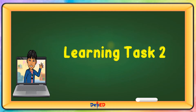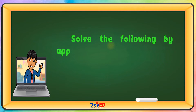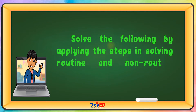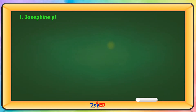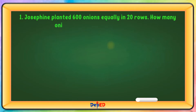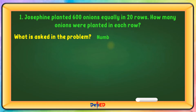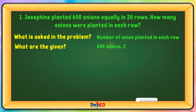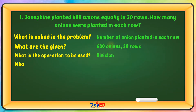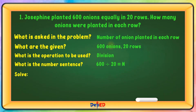Learning Task 2. Solve the following by applying the steps in solving routine and non-routine problems. Lucifene planted 600 onions equally in 20 rows. How many onions were planted in each row? What is asked in the problem? Number of onions planted in each row. What are the given? 600 onions, 20 rows. What is the operation to be used? Division. What is the number sentence? 600 divided by 20 equals N. Let us solve: 600 divided by 20 equals 30. So, 30 onions were planted in each row.